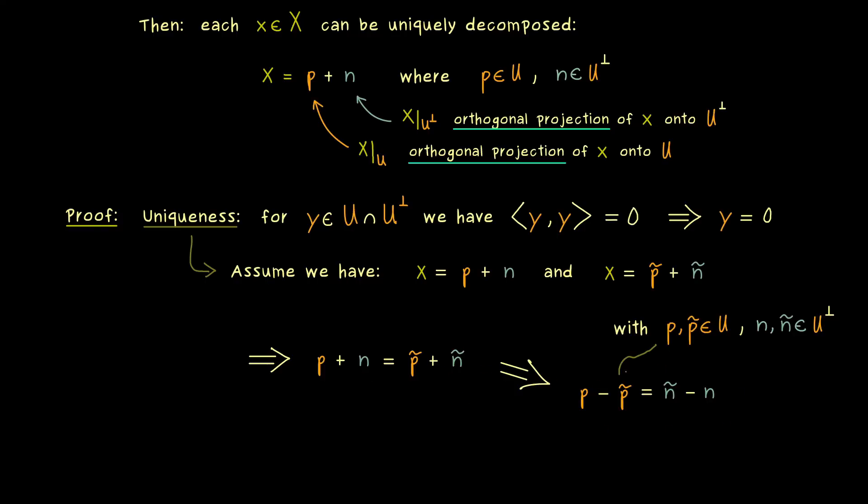However, now we can use that we have subspaces, so the left hand side lies in U and the right hand side lies in U perp. This is quite an important point, because of the equality. This means that we actually lie in the intersection of both subspaces. Hence the left hand side and the right hand side here is given by the zero vector.